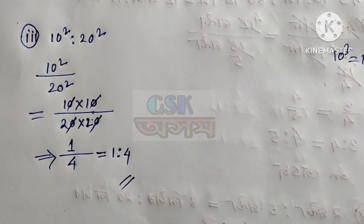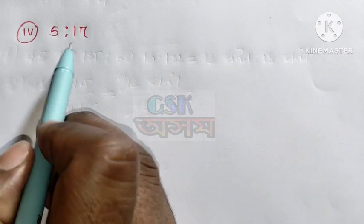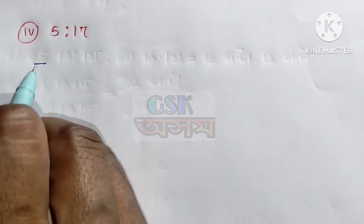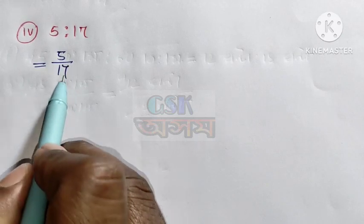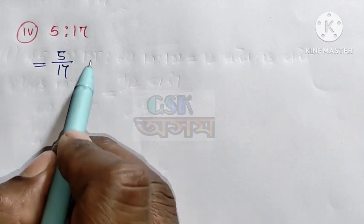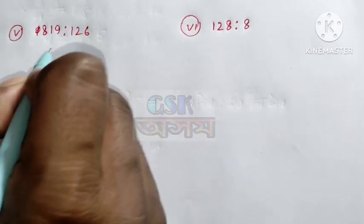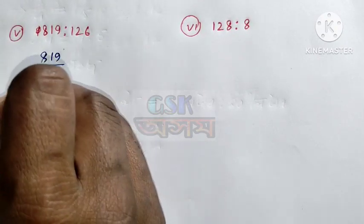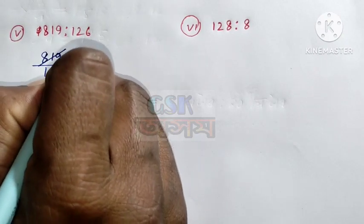This is equal to 1. Question 4 is 5 to 17. 5 to 17 is equal to 5 by 17. 5 by 17 is equal to 1. This is equal to 1. The answer is equal to 1.